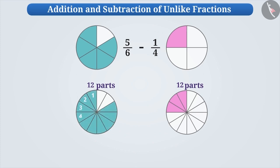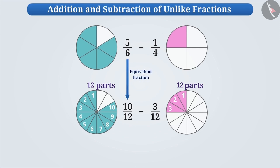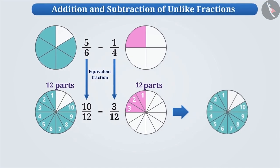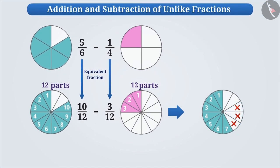Since here 10 out of 12 parts are shaded, the fraction is 10 by 12. Similarly, here 3 out of 12 parts are shaded, therefore the fraction is 3 by 12. Thus, the equivalent fraction of 5 by 6 is 10 by 12 and the equivalent fraction of 1 by 4 is 3 by 12. Now since the denominators are equal, we can subtract 3 parts from 10 parts. After subtraction, 7 out of 12 parts are remaining. Therefore, the subtraction of 1 by 4 from 5 by 6 is 7 by 12.